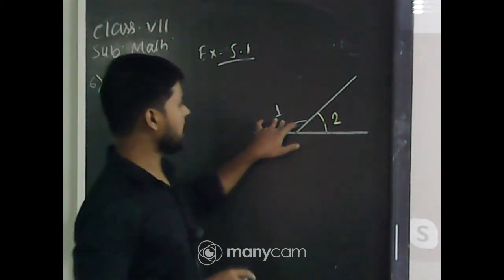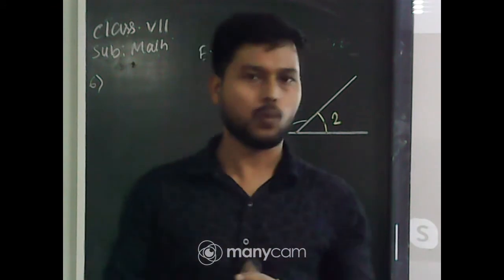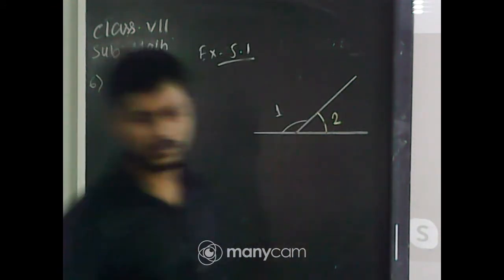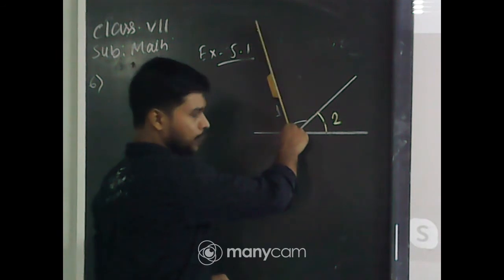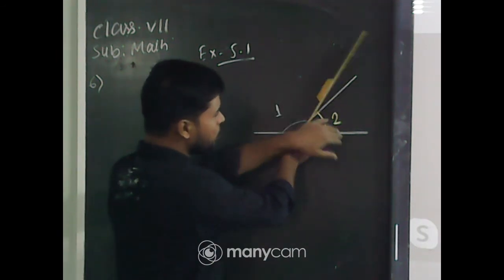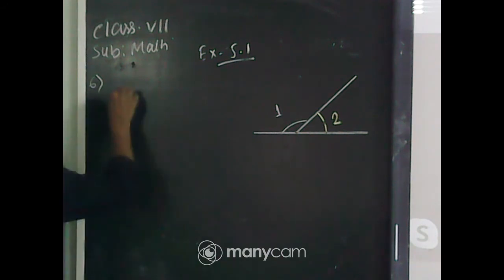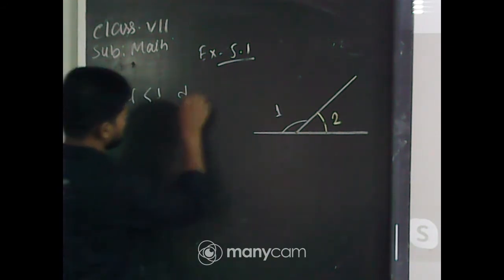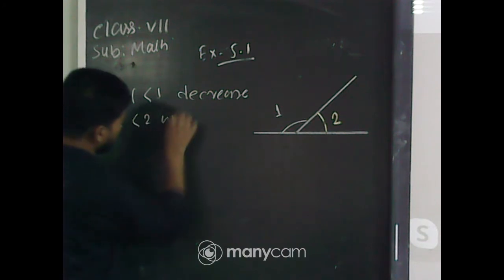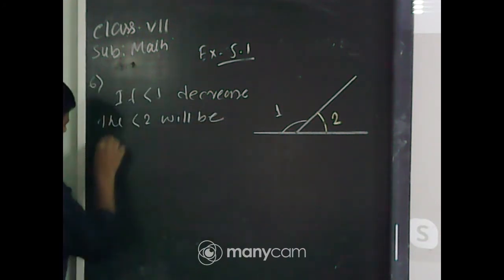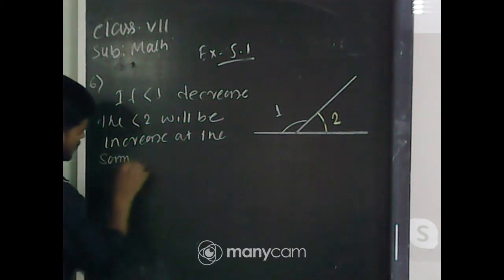Given that angle 1 and angle 2 are supplementary angles — meaning their sum is equal to 180. If angle 1 decreased, meaning if I rotate this line anti-clockwise, then the measurement of angle 1 will be decreased. And at the same time, angle 2 will be increasing at the same rate as angle 1 decreased.